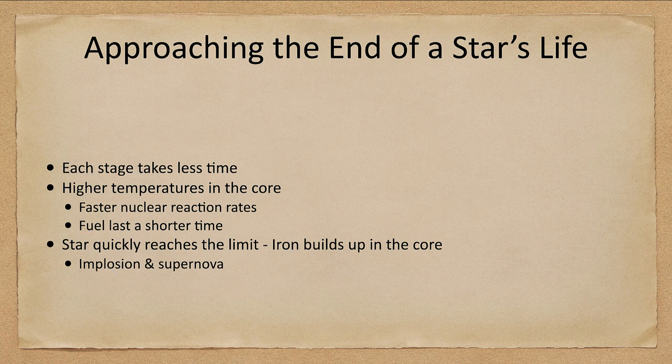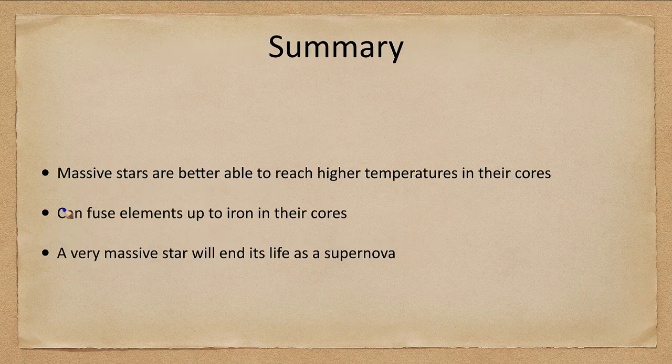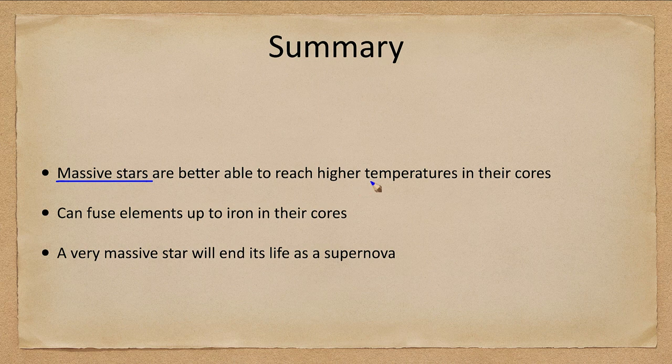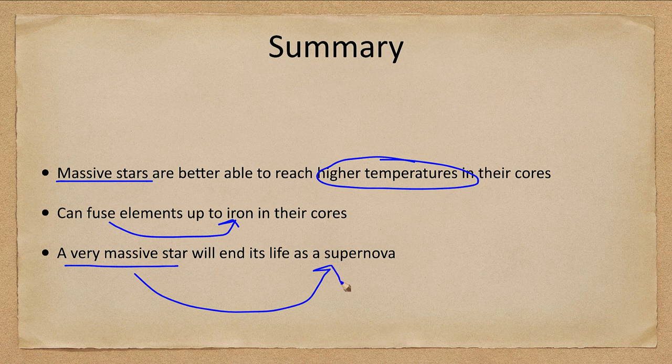So let's go ahead and finish up with our summary. What we've looked at is massive stars are better able to reach higher temperatures in their core and fuse heavier elements. In fact they can fuse things up to iron and those very massive stars will end their lives as a supernova.